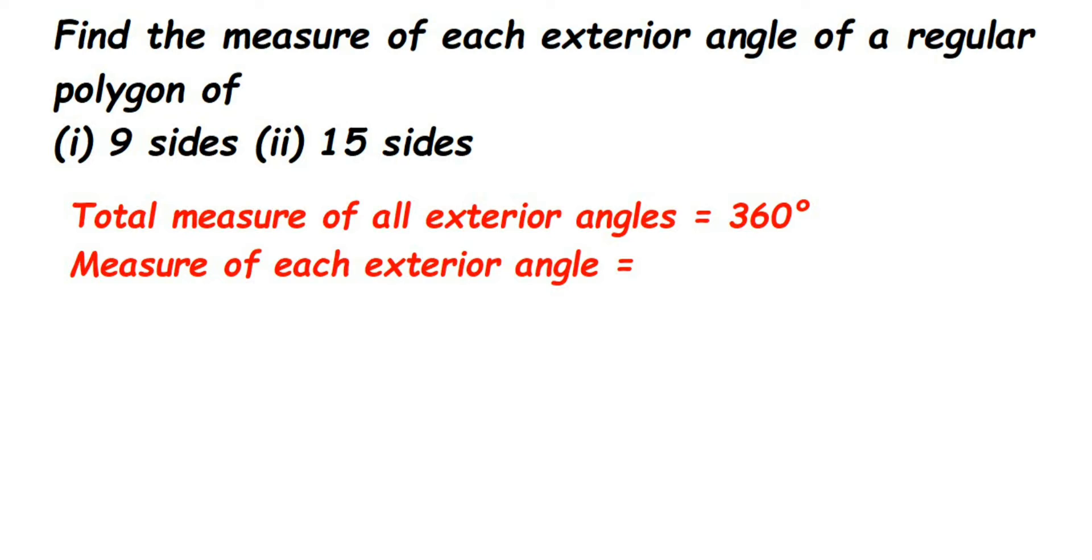Hello everyone, here is a question on quadrilaterals. The question is find the measure of each exterior angle of a regular polygon of 9 sides and the second one is 15 sides.